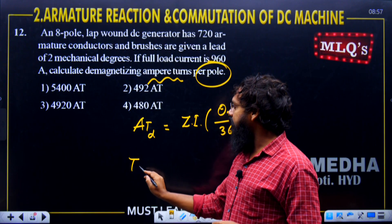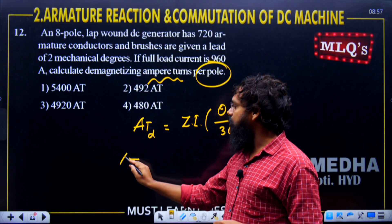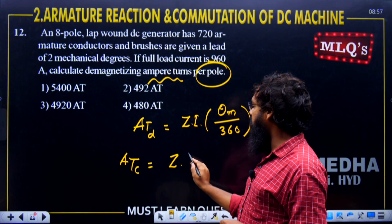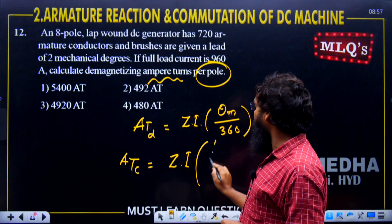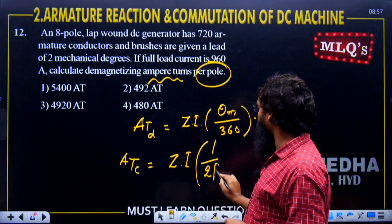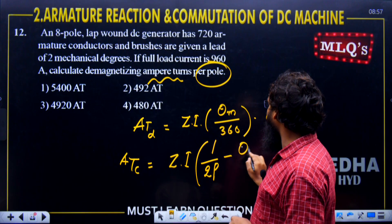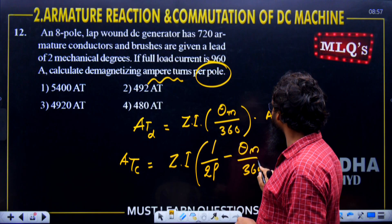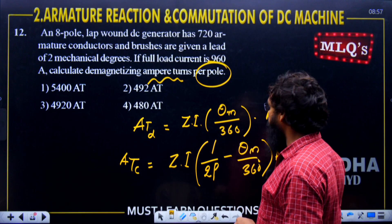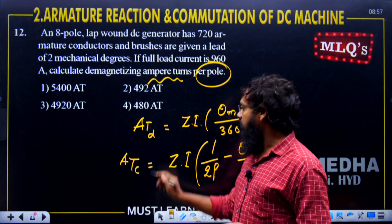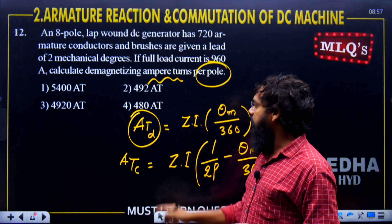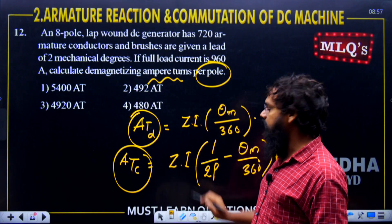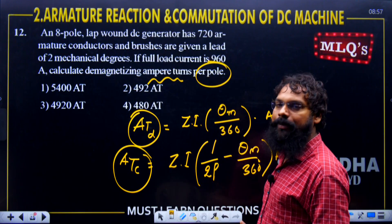If you get a question about cross-magnetizing ampere-turns, the formula is: AT = Z × I × (1/2 × (1/P) − θ_m/360). These are the direct formulas for the demagnetizing component current and the cross-magnetization component.